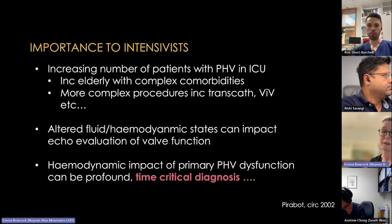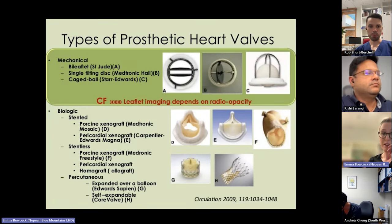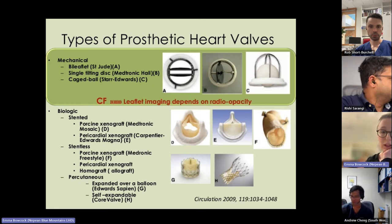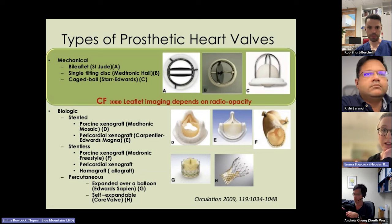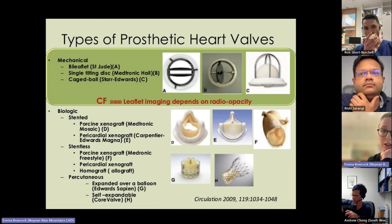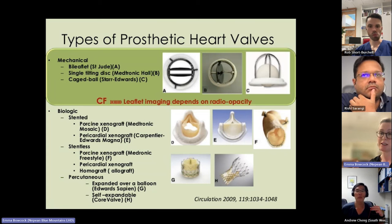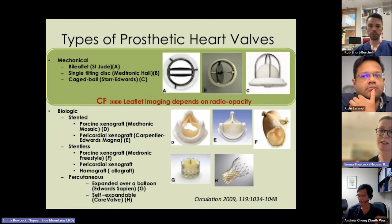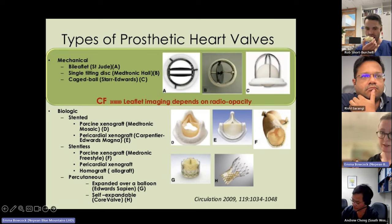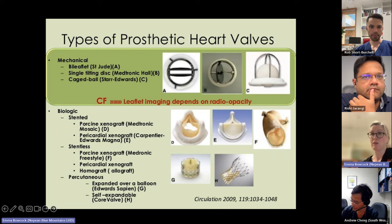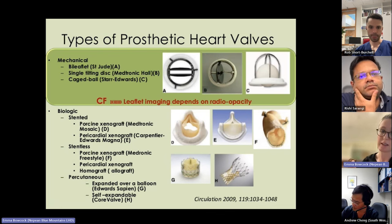The different types of prosthetic valves: we have mechanical valves — bileaflet, single leaflet tilting discs, and the cage-ball Starr-Edwards valve which was the first implanted in 1954 and is rarely used now. We predominantly see bileaflets in both the outpatient and ICU settings.